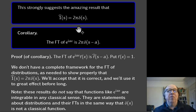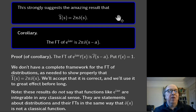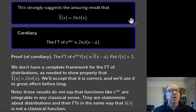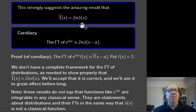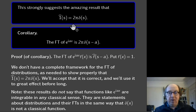These examples very strongly suggest an amazing result: the Fourier transform of 1 is 2π δ(s). That is a formula you couldn't have conceived of getting your head around before starting this course. The Fourier transform of 1 is 2π δ(s).